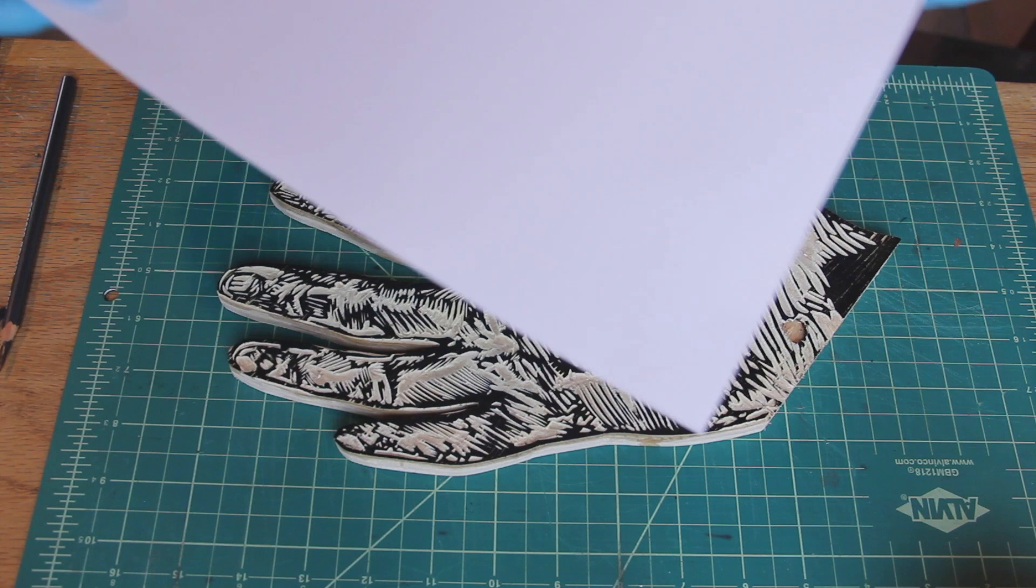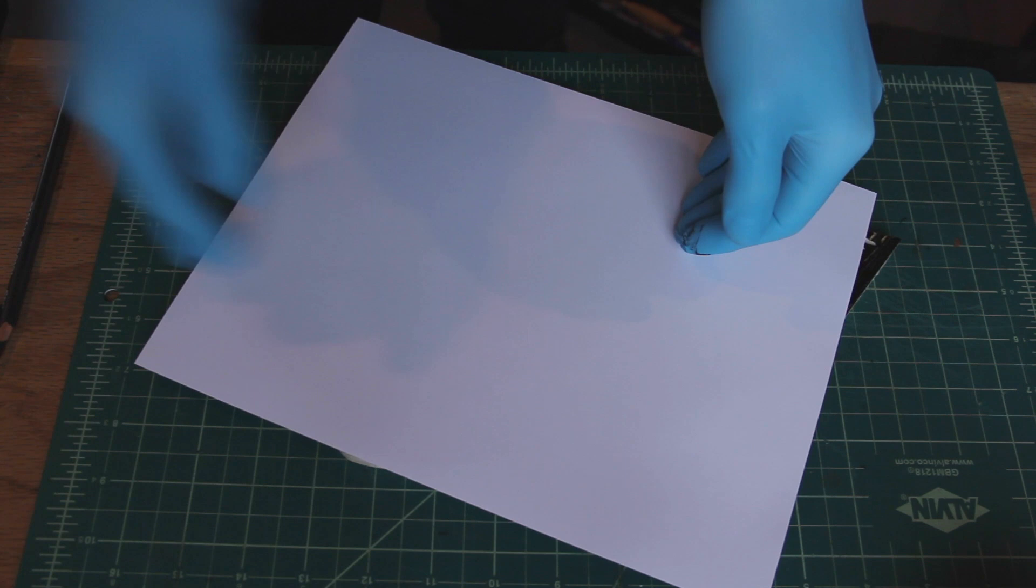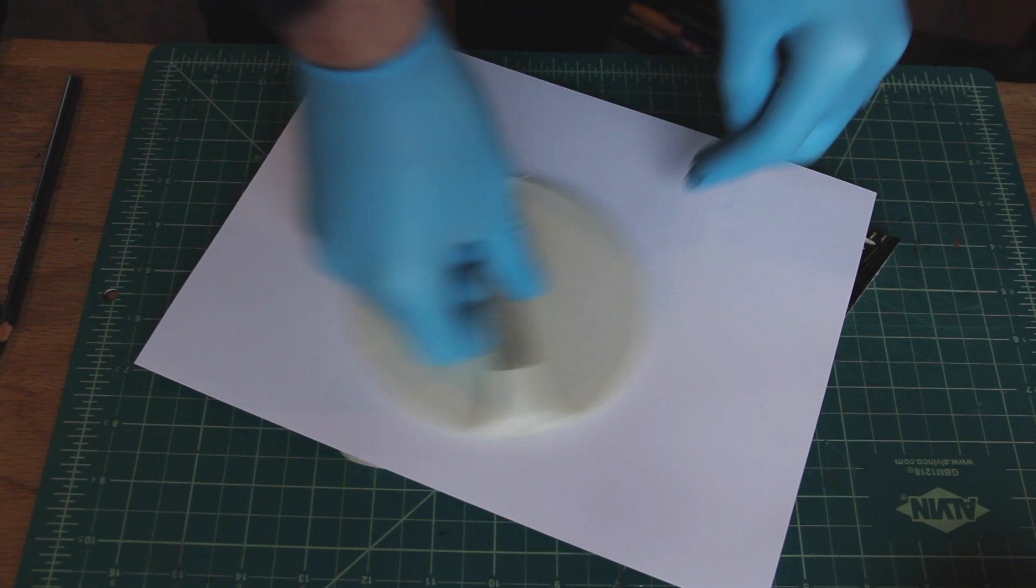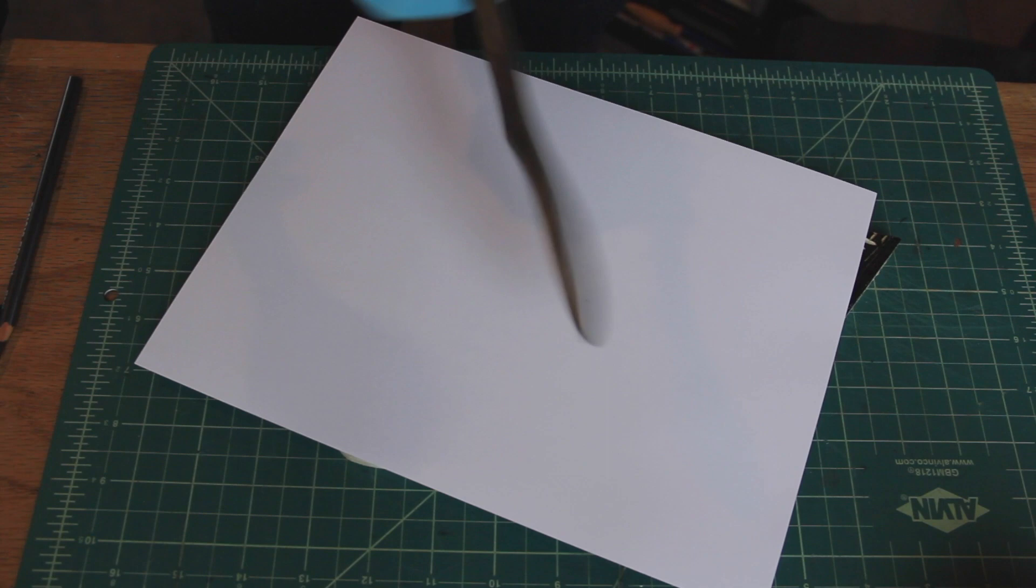I'm using regular or heavy office paper for this. This is not the best for hand printing, but I want to show something that might be more accessible. So with the baron, I am going to just use that to lightly stick the paper to the woodcut. Same thing with the spoon, just very lightly from the back.